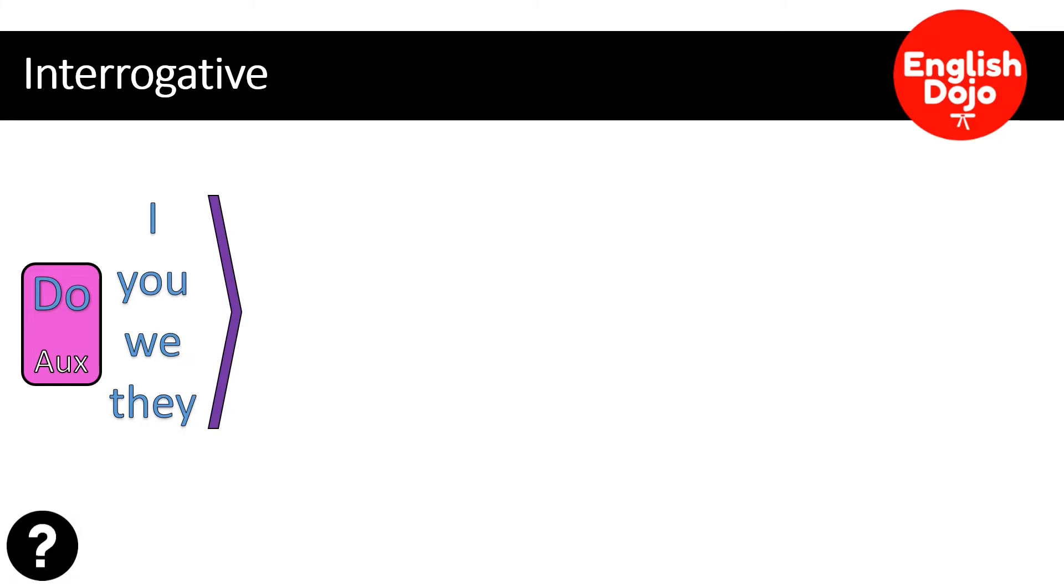La parte interrogativa. Pasa algo muy similar. Solamente cambia un poquito el orden de las palabras. En este caso, vamos a empezar con el auxiliar, do. En inglés, siempre que preguntes, tienes que comenzar con un auxiliar. Al menos, preguntas cerradas. Comienzas con un auxiliar. Ya lo tenemos. Ahora necesitamos la persona. Recuerda que es I, you, we, they.